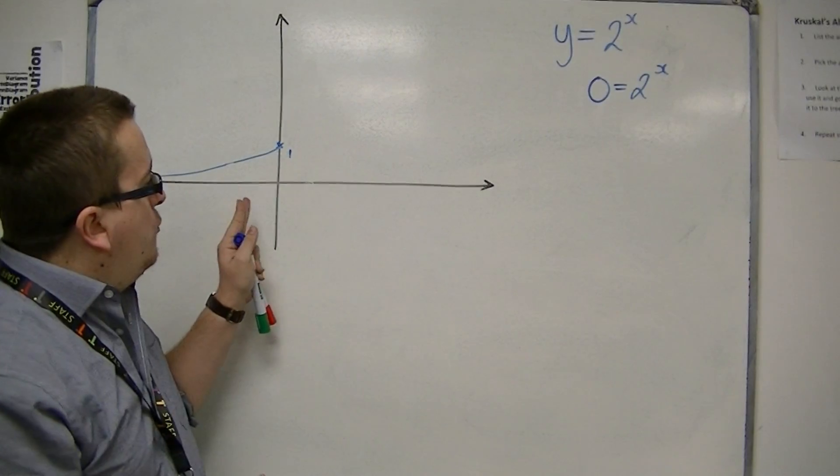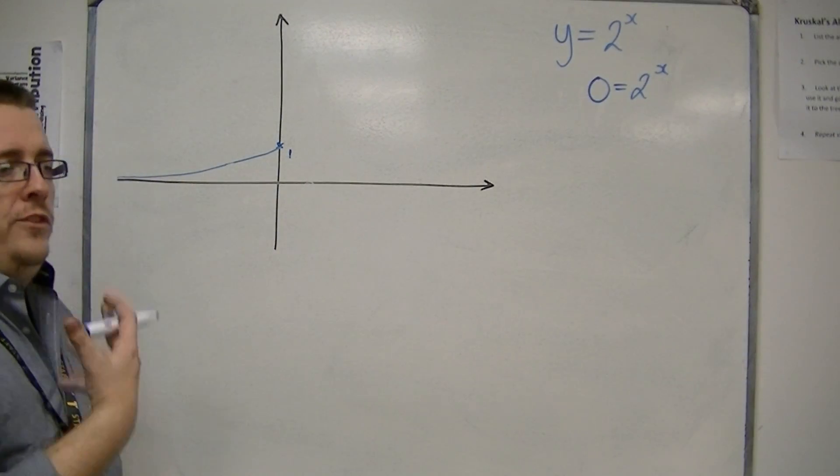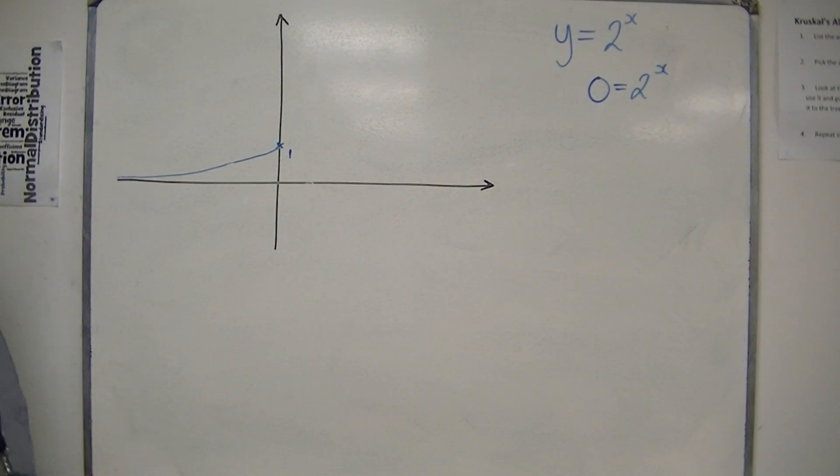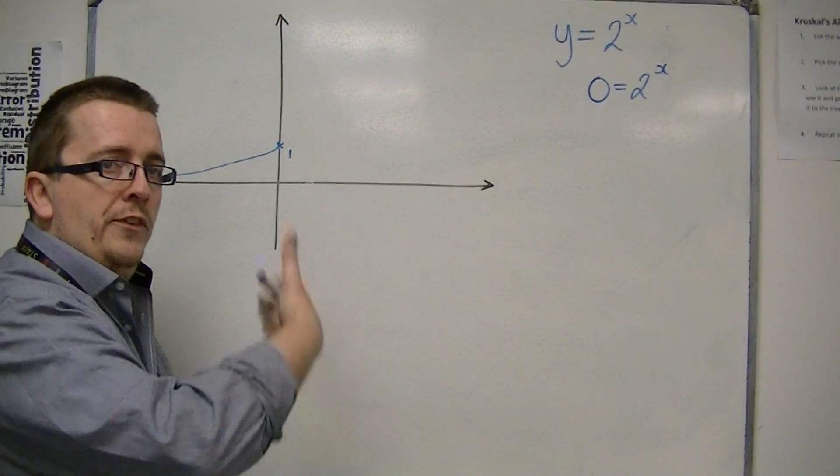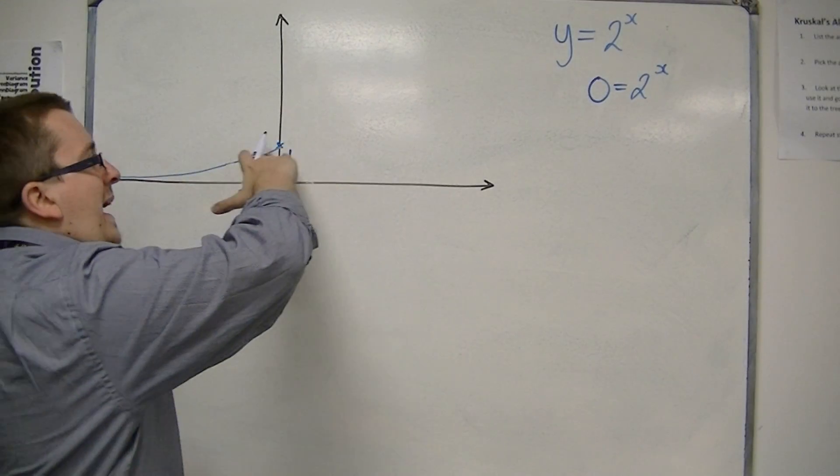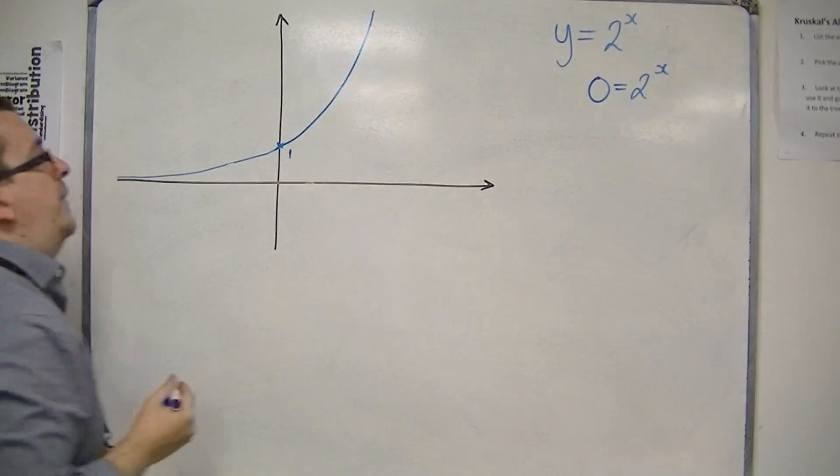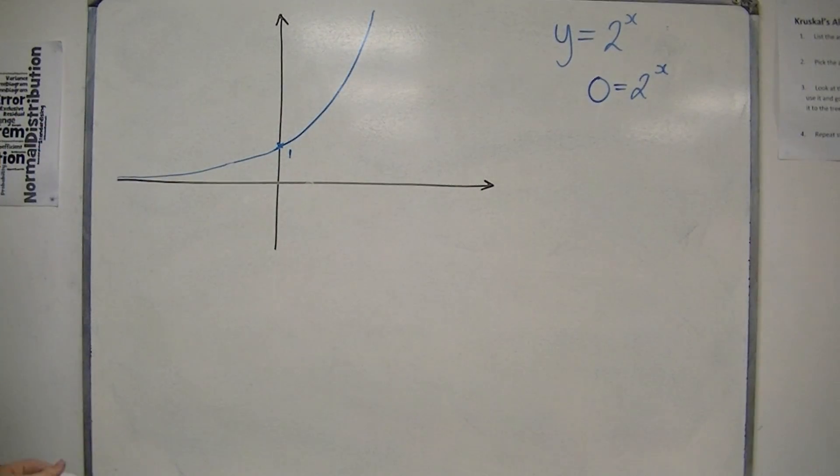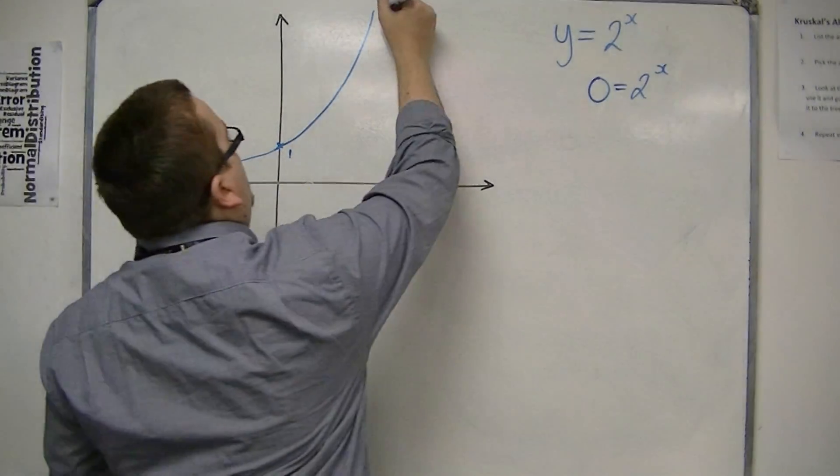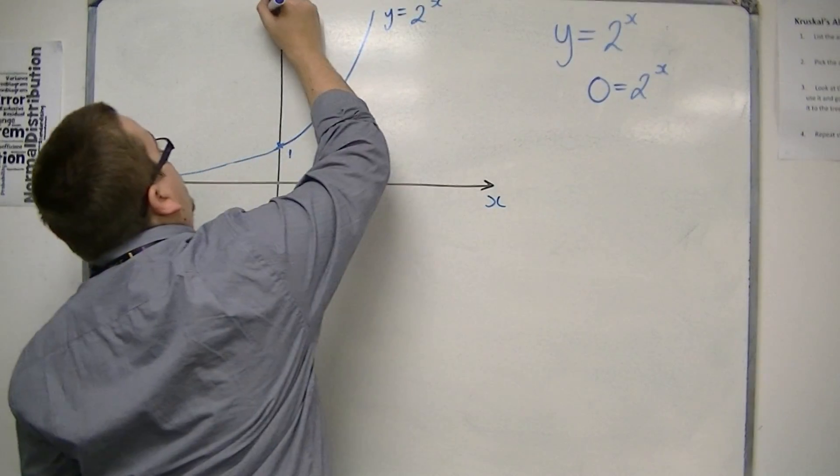But when we go to the right of the y axis, so you're looking at 2 to the 1, 2 to the 2, 2 to the 3, so you're looking at 2, 4, 16, 64, then the curve increases exponentially. And so it increases very rapidly. So this could be y is equal to 2 to the x, and a sketch of it.